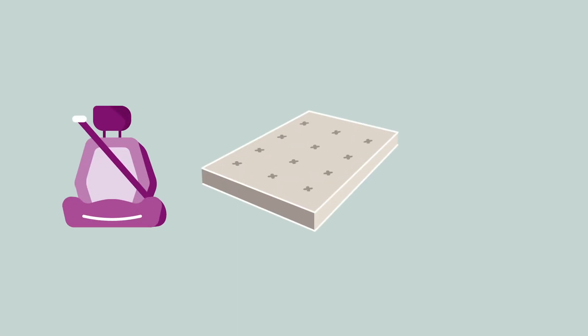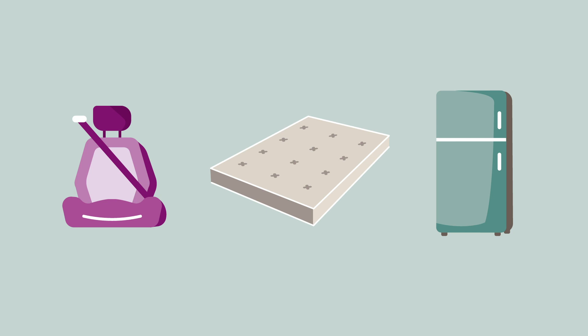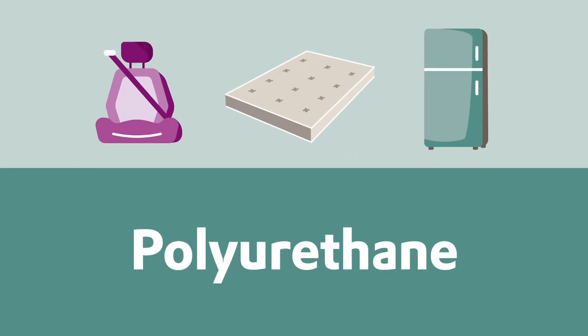Whether it's car seats, mattresses, or refrigerators, products made from polyurethane plastics are part of everyday life.